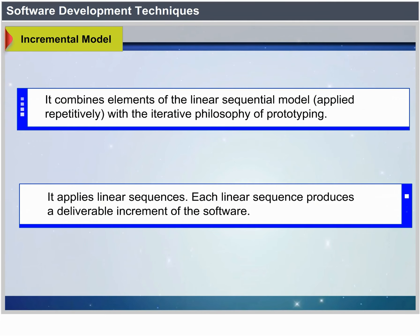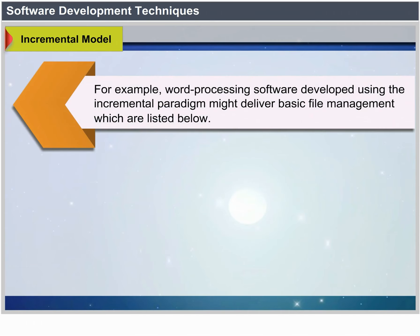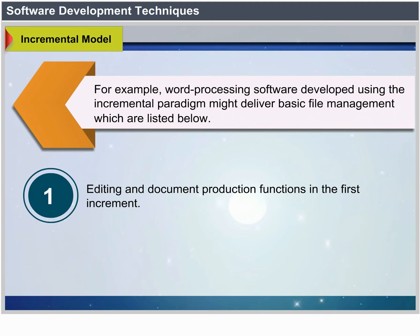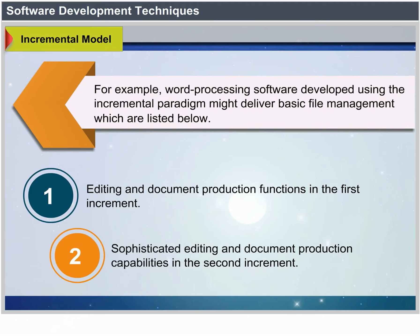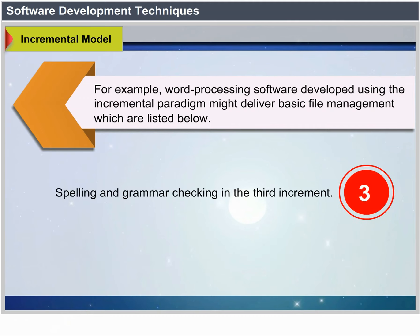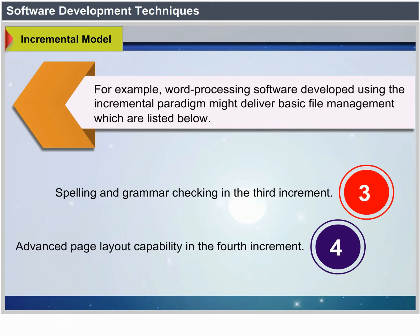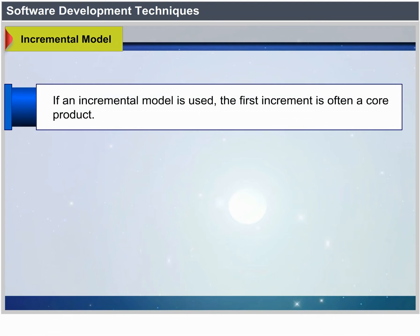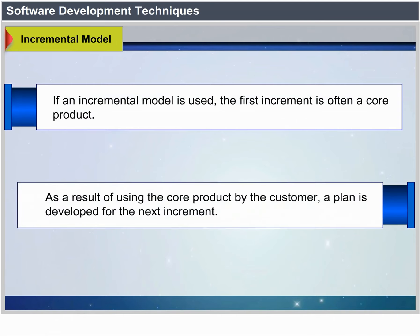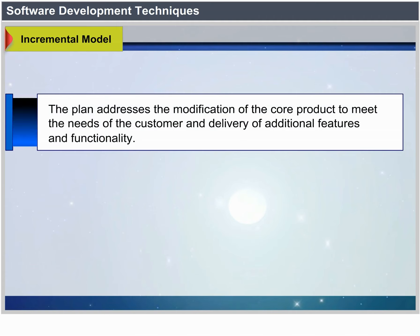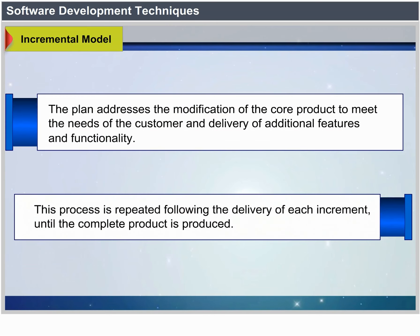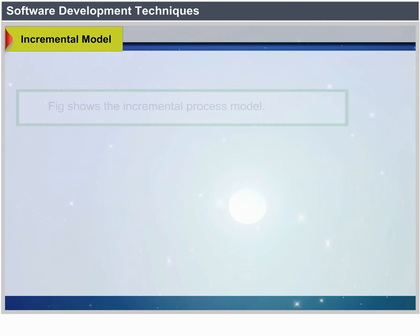The Incremental Model applies linear sequences, each producing a deliverable increment. For example, word processing software developed using this paradigm might deliver basic file management, editing, and document production in the first increment; more sophisticated editing in the second; spelling and grammar checking in the third; and advanced page layout in the fourth. The first increment is often a core product used by the customer, from which a plan is developed for the next increment addressing modifications and additional features. This process repeats until the complete product is produced.